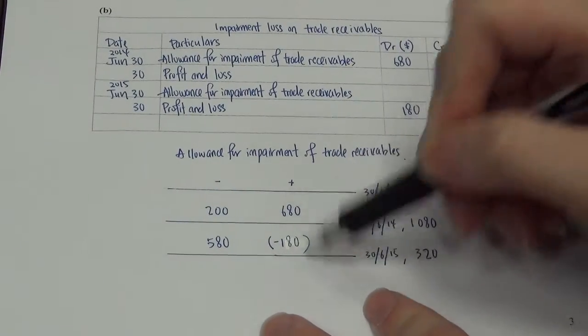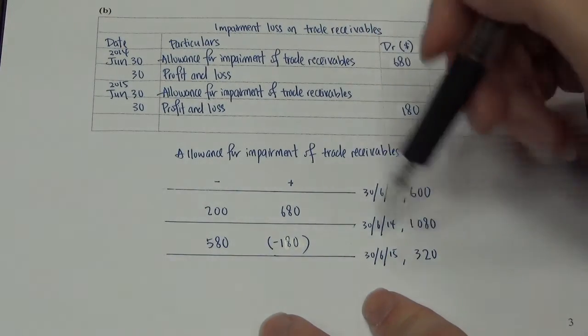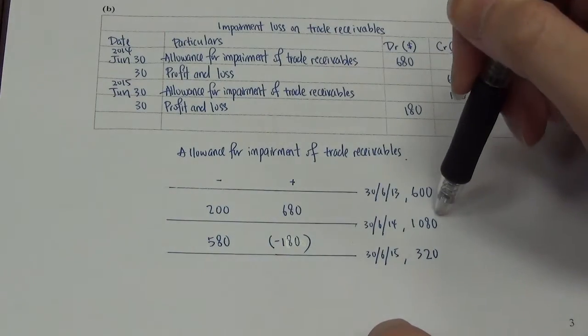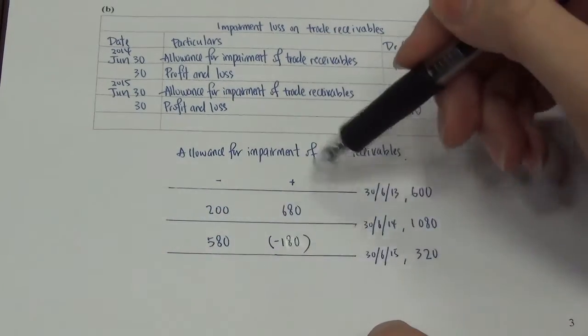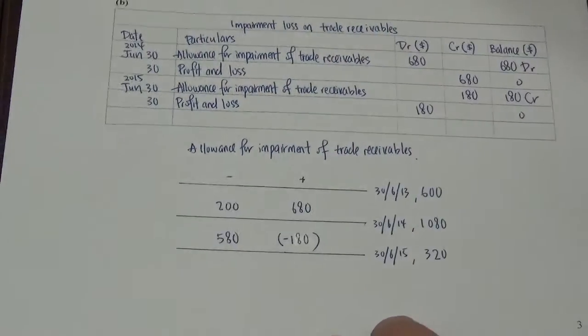These are for you yourself to calculate. So, 600 minus 200 plus unknown give you 1080. You should be able to arrive at 680. While 1080 minus 580 plus unknown give you 320. So, this happens to be a negative figure. Once you arrive at this.